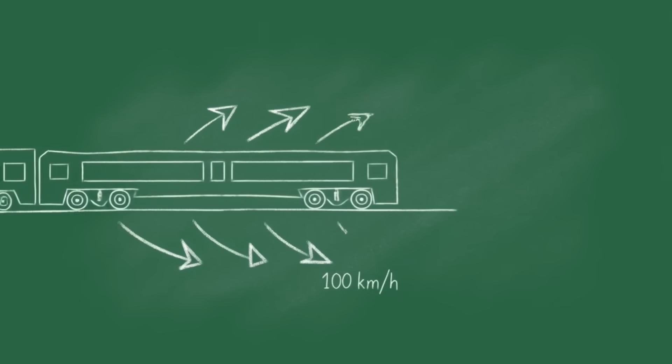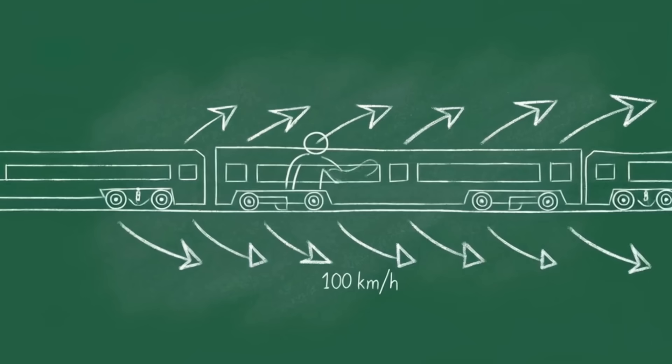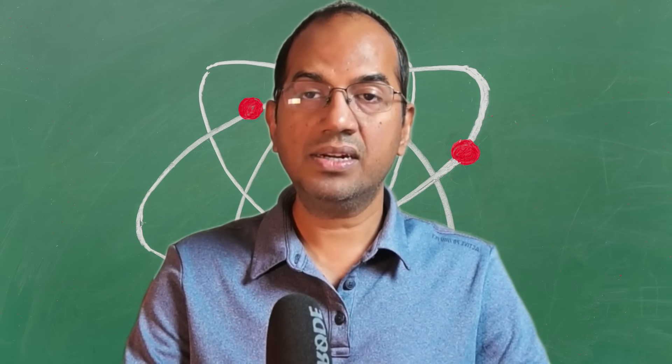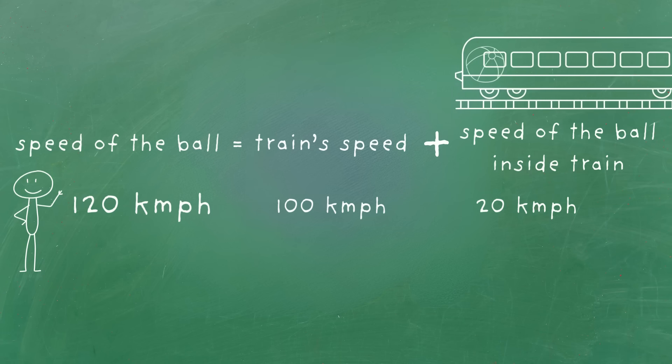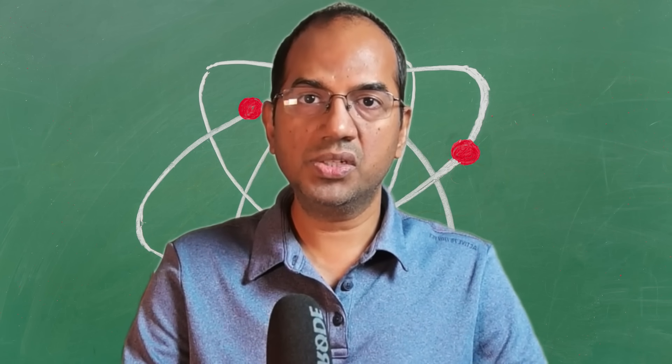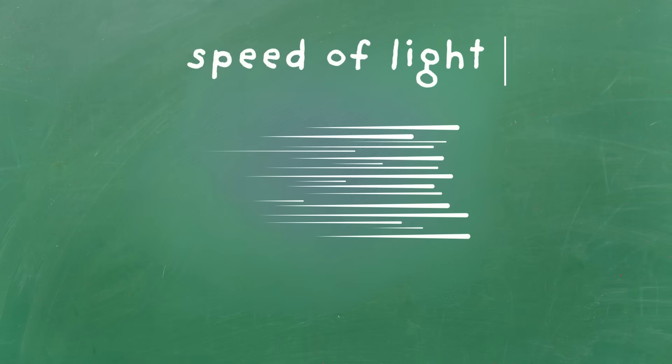For example, if you are on a train moving at 100 km/h and you throw a ball forward at 20 km/h, someone on the platform will see the ball zipping by at 120 km/h. The speeds just add up. It's common sense. For centuries, everyone assumed this simple addition worked for everything, including the fastest thing we know: the speed of light.